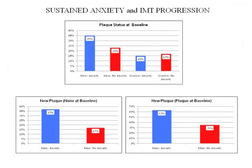Looking at baseline plaque: 35% of anxious men had visible plaque versus 23% of non-anxious men; no difference in women. Looking at new plaque deposition over four years in individuals without baseline plaque: 37% of anxious men developed plaque versus 17% of non-anxious men. This makes sense because anxious individuals had greater IMT increase, and IMT is the staging ground for plaque.